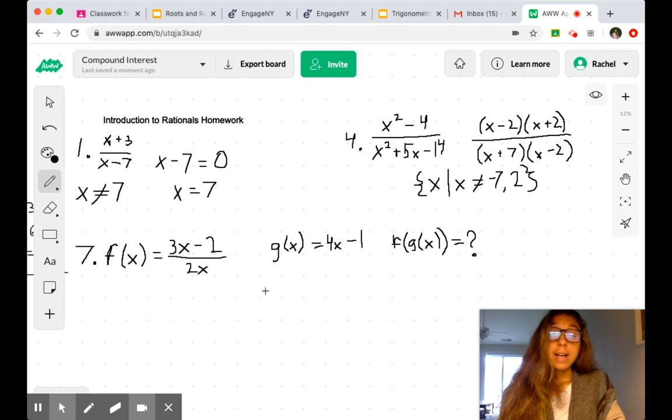And the last one we're going to look at uses some function composition. So we're given two functions, f of x and g of x, and asked to find f of g of x. And what that means is we're taking our function for g, and whenever we see an x, we're writing our function for g instead.